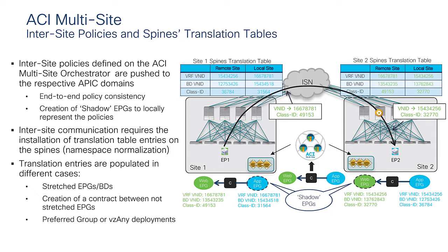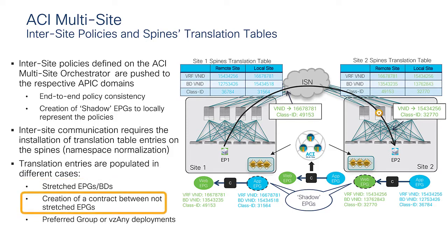Every time we want to establish VXLAN-enabled communication between sites, it is mandatory to create this policy on MSO. The MSO communicates to the APIC the right information to properly configure the translation tables. Preferred group and VZANY are two alternative ways to ensure translation tables are properly populated to allow east-west connectivity.